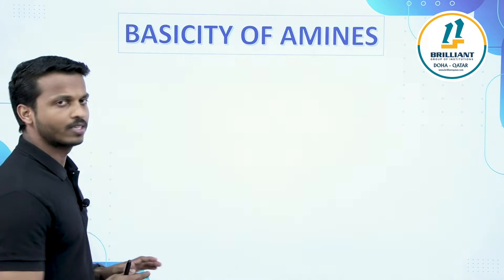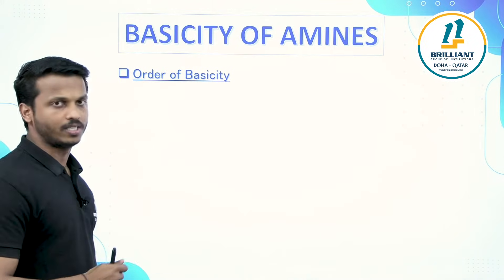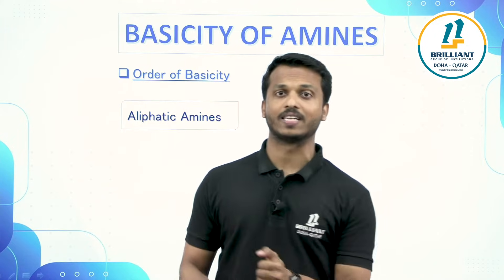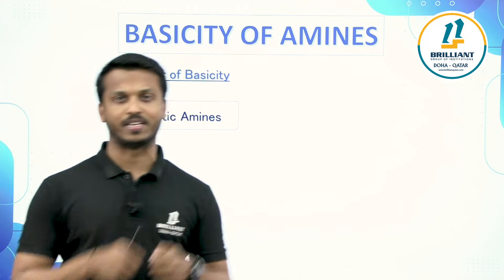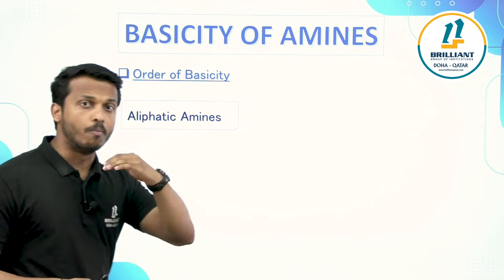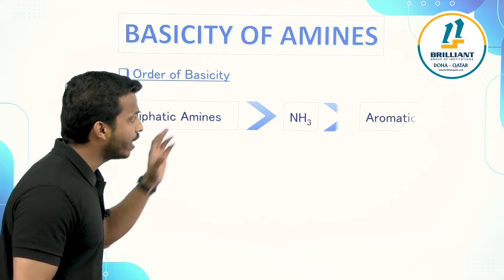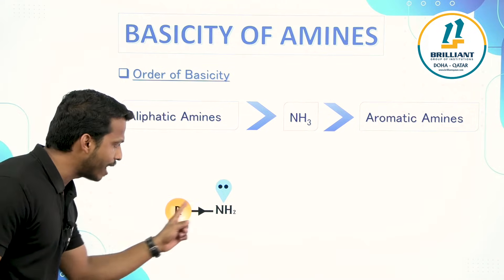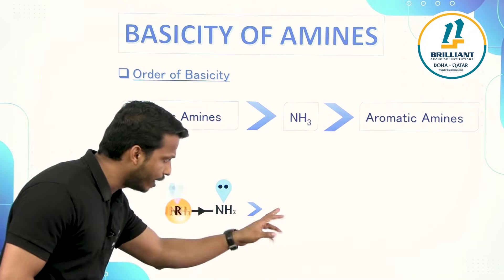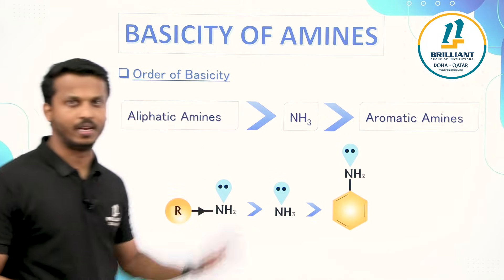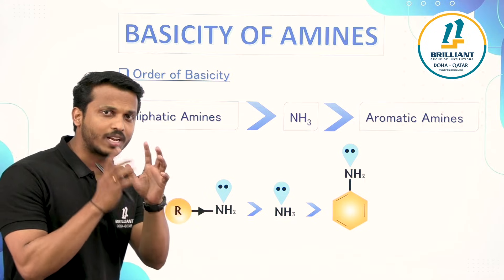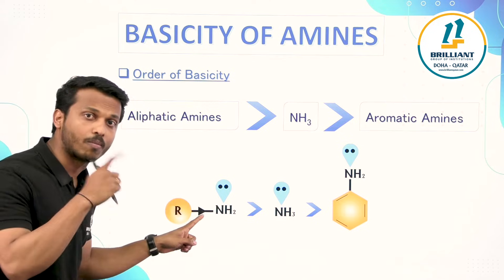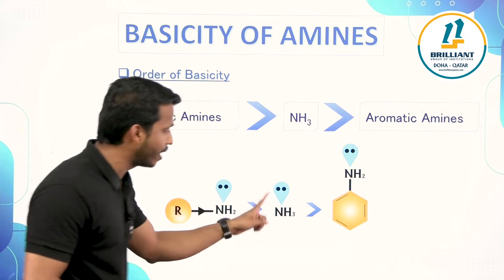We are discussing the topic of basicity of amines — specifically the general order of basicity. Whenever you get a question regarding basicity, first classify them as aliphatic amines or aromatic amines. Aliphatic amines are more basic than ammonia, and ammonia is more basic than aromatic amines. For example, an alkyl amine is aliphatic, and aniline is an aromatic amine.